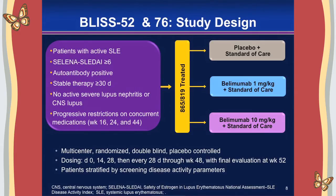In BLISS-52, 865 patients were randomized, and in BLISS-76, 819 patients were randomized into one of three treatment arms: placebo plus global standard of care, or Belimumab at either 1 mg/kg or 10 mg/kg plus standard of care. This was a superiority trial design to show that Belimumab was superior to standard of care.